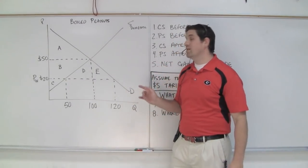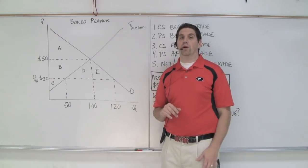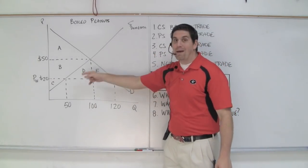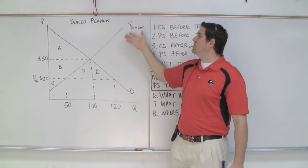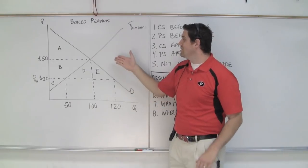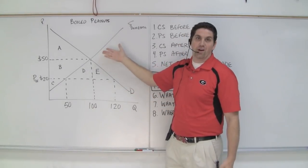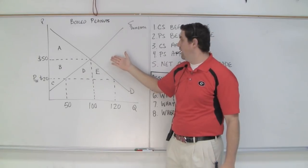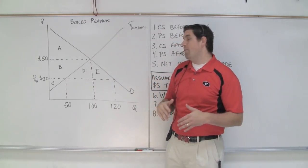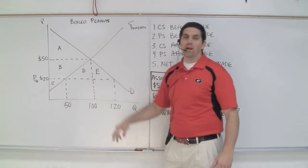Now that you've learned demand and supply and understand consumer and producer surplus, it's time to apply it to a bunch of different situations. Right here what we're looking at is the demand and the domestic supply of some product — let's just say boiled peanuts. You can see that the equilibrium, if we produce in our own country, is $50 for a crate of boiled peanuts. But this graph shows that we can actually buy boiled peanuts from other countries at a world price — Price W — the world price of $20.